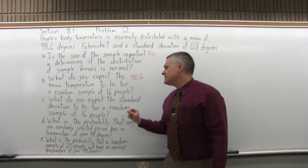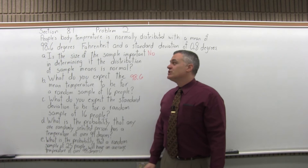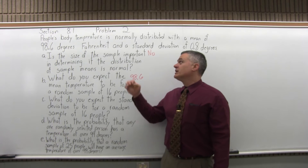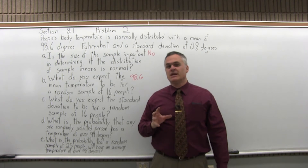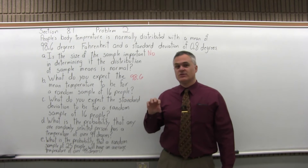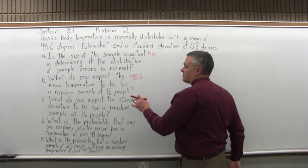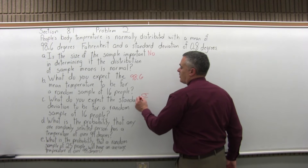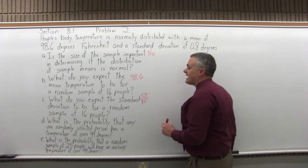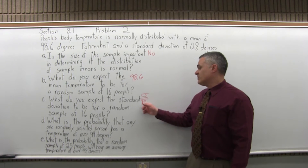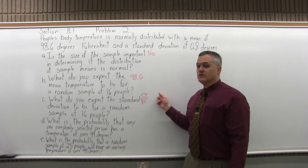Part C asks what you expect the standard deviation to be for a random sample of 16 people. The population has a standard deviation of 0.8, but once you start taking samples it's a little different. What we're looking for is the standard deviation from the mean of one sample to the next. There's a formula for that: it's the standard deviation of the whole population — represented by sigma — over the square root of n, the size of the sample. As you make the sample bigger, you divide by a larger result, giving a smaller standard deviation overall.